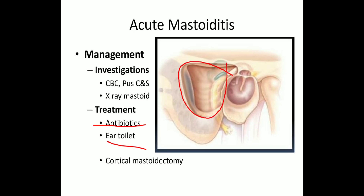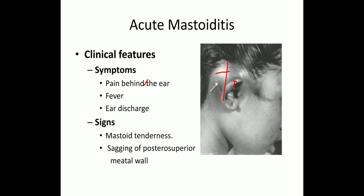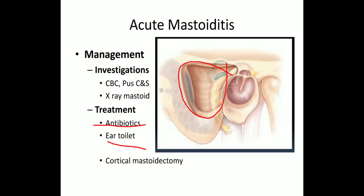Cortical mastoidectomy was originally designed to drain pus from mastoid air cells in mastoiditis. From an examination point of view, when asked about a disease, always classify and write: first definition, then etiology, then pathology, then clinical features — symptoms and signs — then management. Whenever asked about management, never jump to treatment first; always start with investigations, then medical management, then surgical management. This applies not only to ENT but to all subjects.